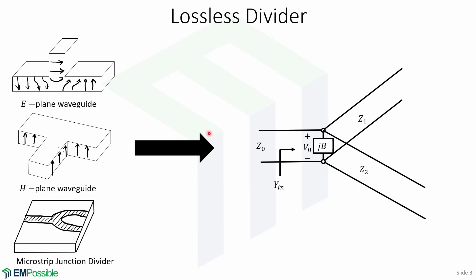There are many types of T-junction power dividers, for example, the E-plane waveguide T, the H-plane waveguide T, and a microstrip line T-junction divider. All of these lossless T-junction dividers can be modeled as a junction of three transmission lines, as shown in this picture.